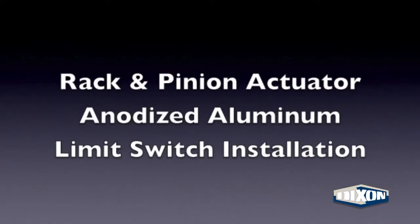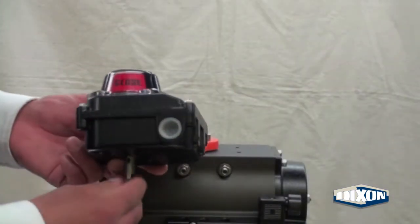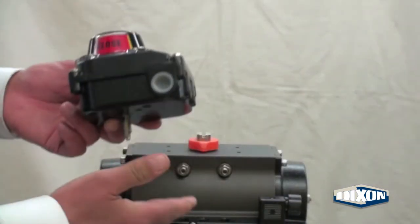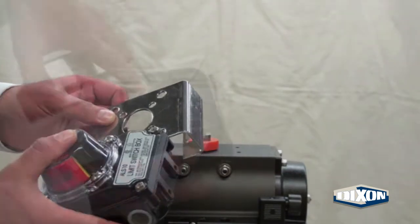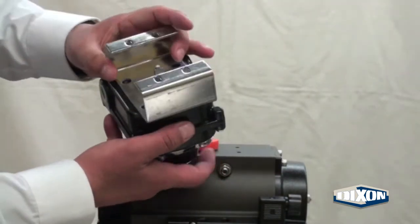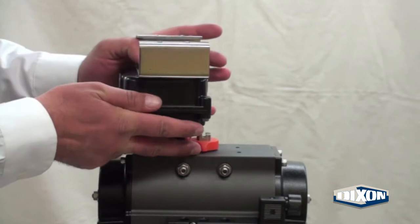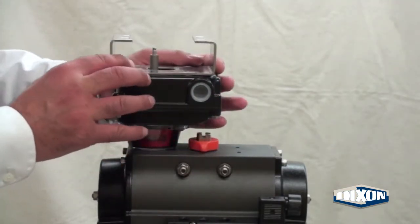Rack and Pinion Actuator Anodized Aluminum Limit Switch Installation. The limit switch assembles to an aluminum rack and pinion actuator with the use of a stainless steel bracket. The bracket is mounted to the bottom of the limit switch and the top of the actuator.